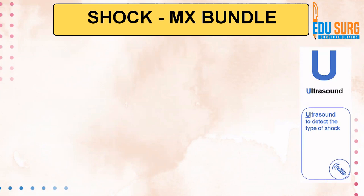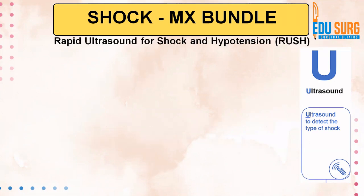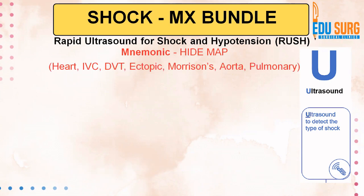Once you have done the early management — ABC, started the infusions, and sent the investigations — you can use the ultrasound, which is already established in higher volume centers. Rapid ultrasound for shock and hypotension — the mnemonic is HIDEMP. HIDEMP stands for the areas you assess: Heart, IVC, DVT, Ectopic pregnancy, Morrison's pouch, Aorta, and Pulmonary. Basically, you look at all these areas and most of the time you will identify the cause of your shock.